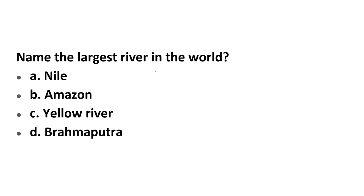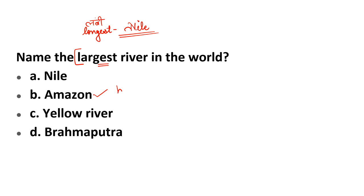Name the largest river in the world. Be careful — questions about 'longest' come frequently and students quickly answer Nile. But the question here asks for the 'largest' — there is a difference between longest and largest. The Nile is the longest river, but in terms of water volume, the Amazon River is the largest. So B — Amazon — is the correct answer.